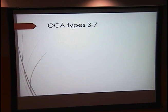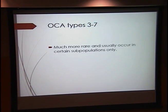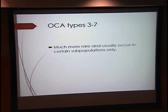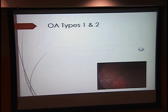OCA types 3 through 7 are worth briefly mentioning — they are very rare, usually only occurring in certain subpopulations.